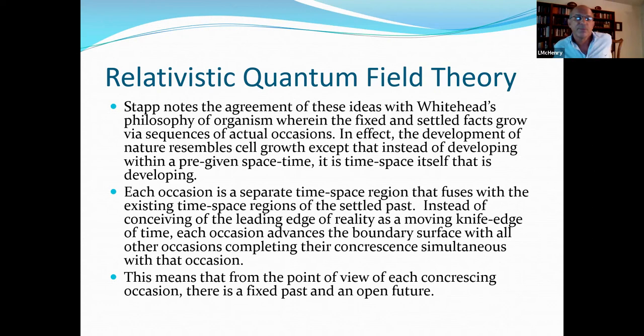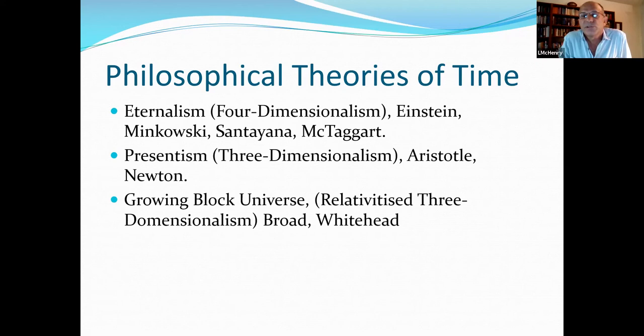This means that from the point of view of each concrescing occasion, there is a fixed past and an open future. Now, how does this fit with philosophical theories of time? Well, we basically have three different theories here. Eternalism, which is the four-dimensional theory espoused by Parmenides, Einstein, Minkowski, Santayana, and also McTaggart. Presentism, which is a three-dimensional view, mainly espoused by Aristotle and Newton, and the growing block universe or relativized three-dimensionalism espoused by Broad and also, I think, Whitehead.